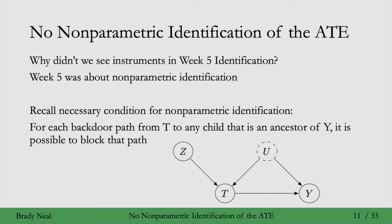And that necessary condition was: for each backdoor path from T to any child that is an ancestor of Y, it is possible to block that path. In this graph, just consider that Y is an ancestor of itself. And here, in this graph, Y is a child of T, but we can't block this backdoor path through U because U is unobserved. Therefore, this necessary condition tells us that we can't get non-parametric identification in this case.